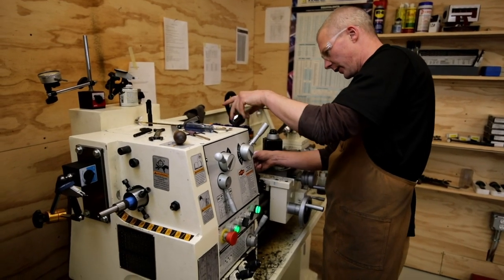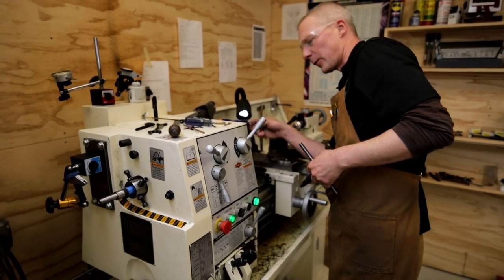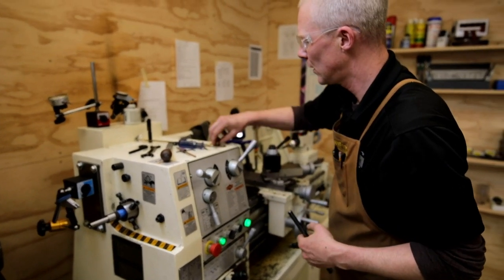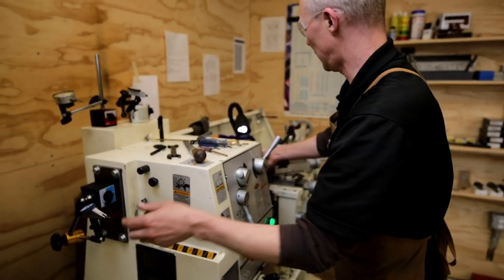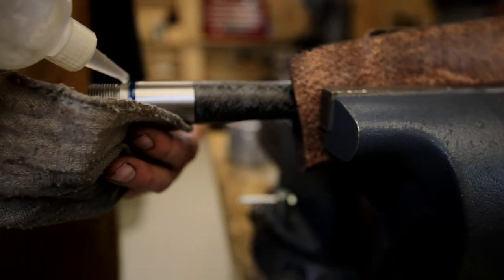Okay, so off camera I went in and chamfered the sharp edges and polished the chamber, and now we're going to take it out of the machine and prepare the barrel for torquing on the receiver.